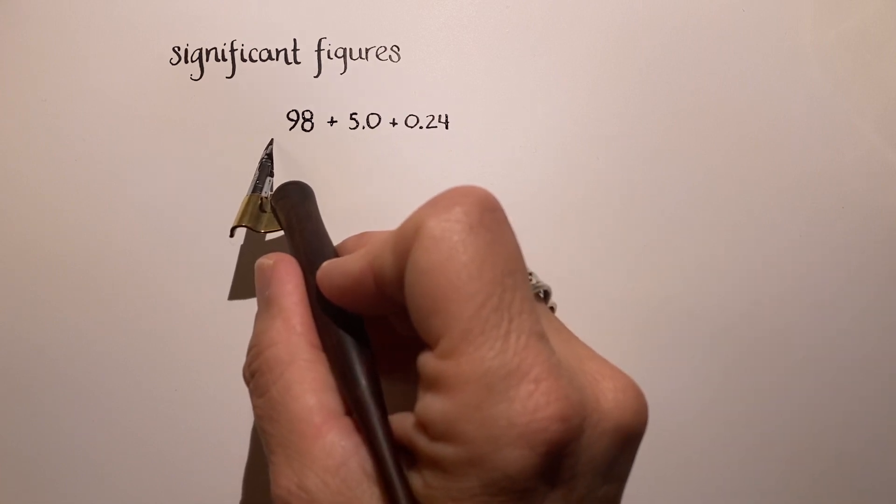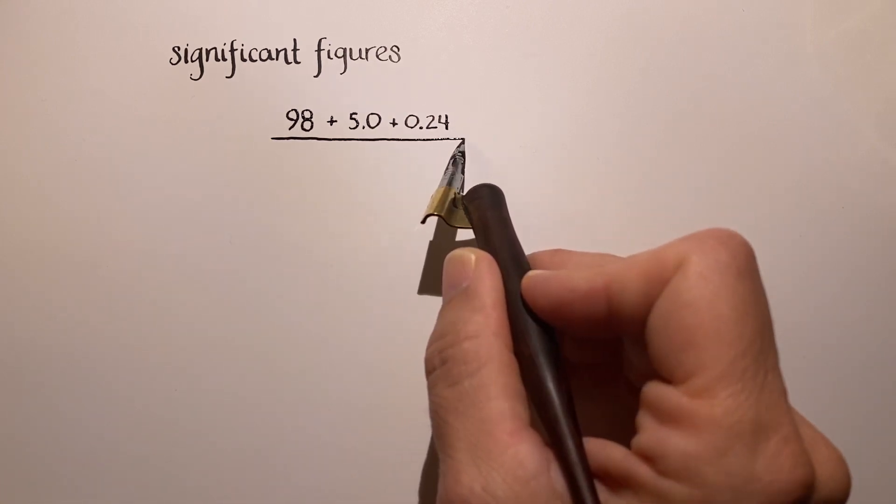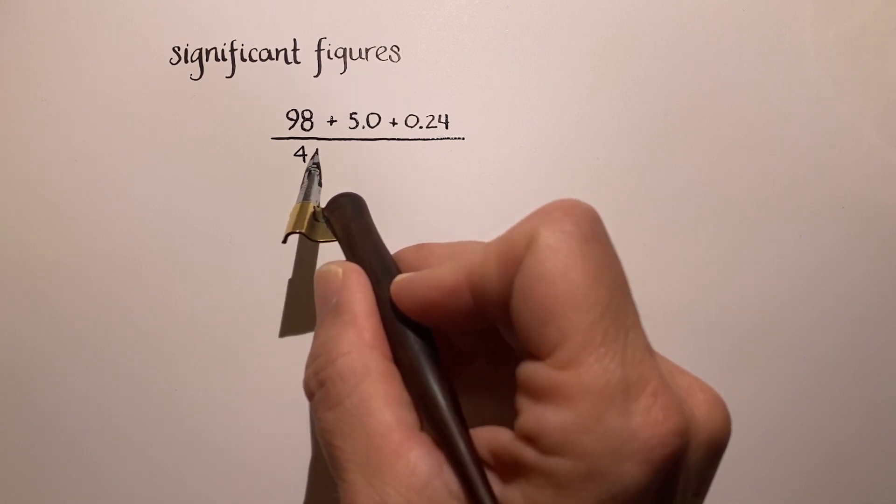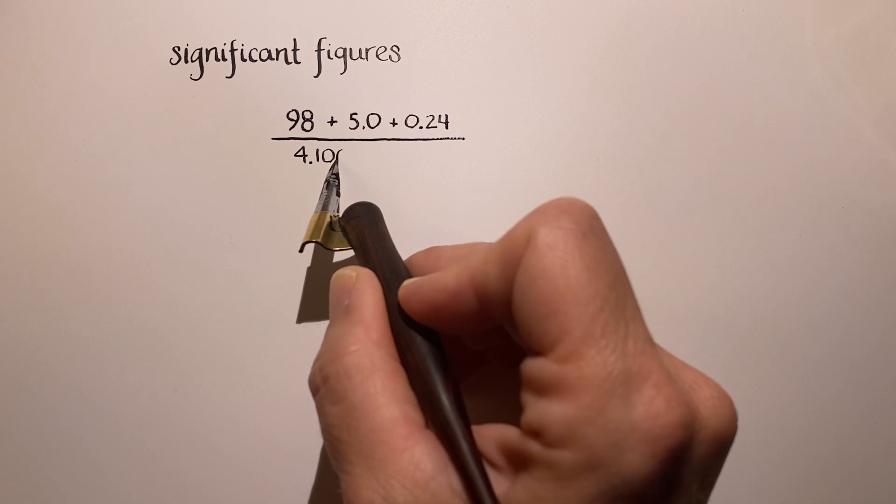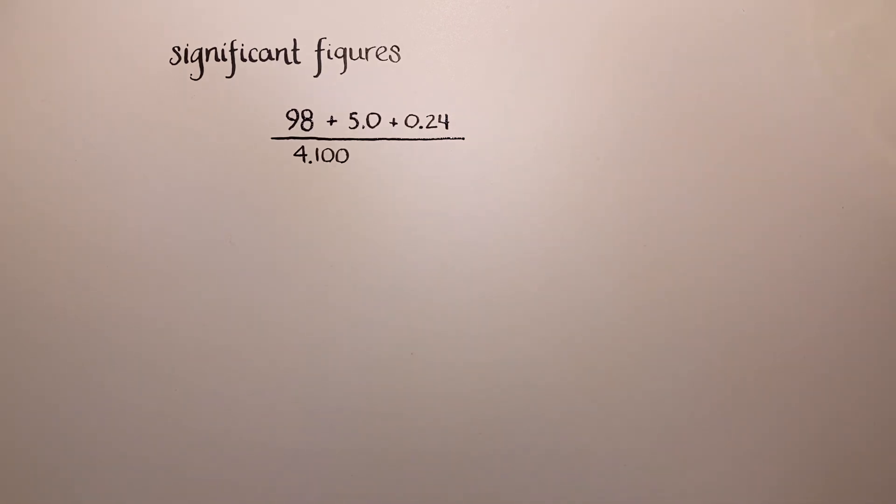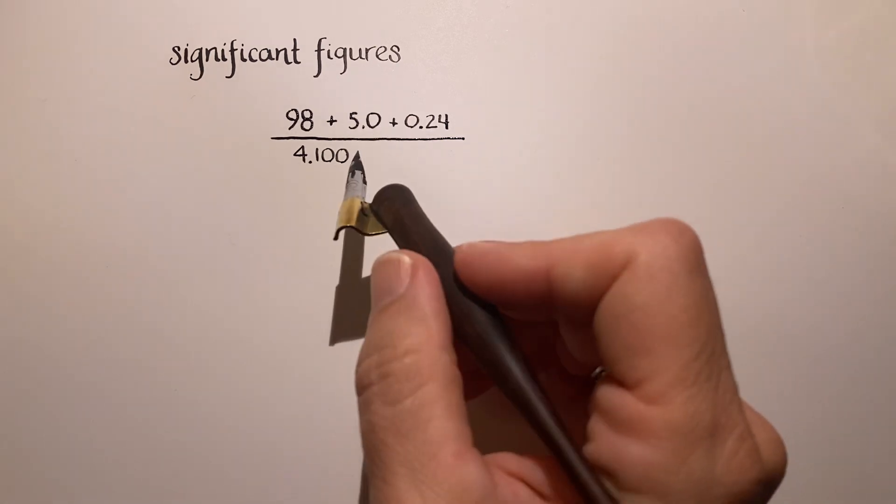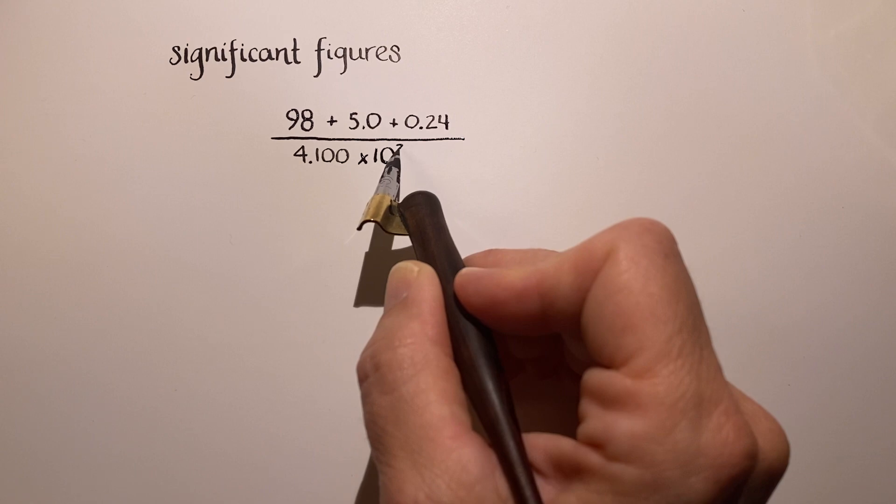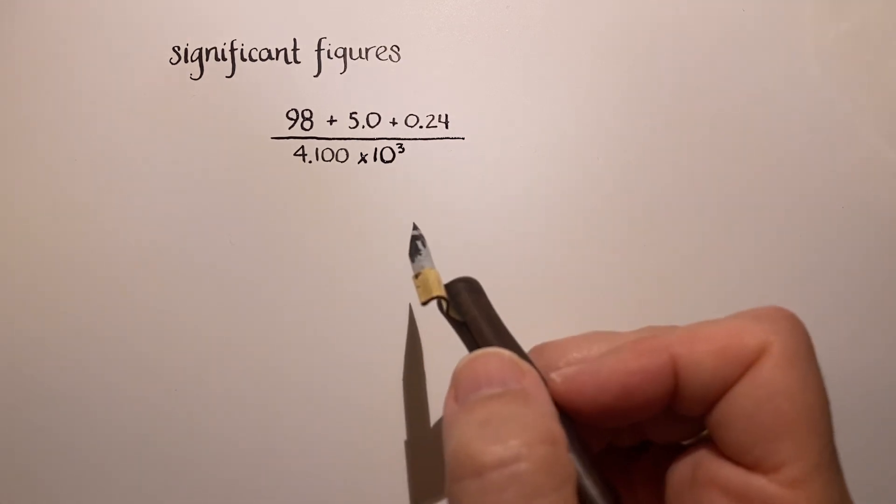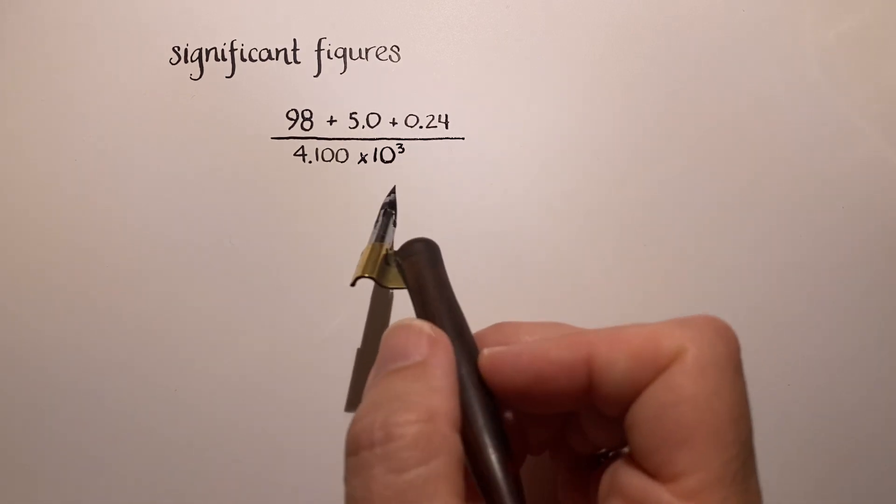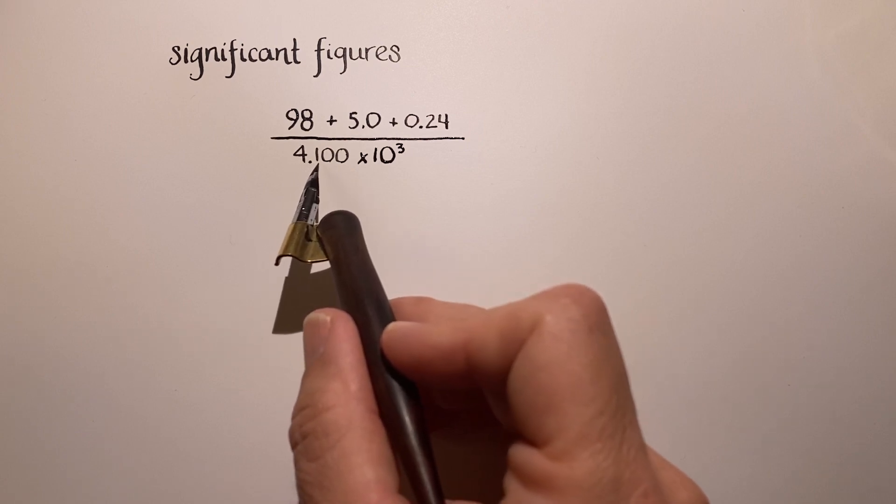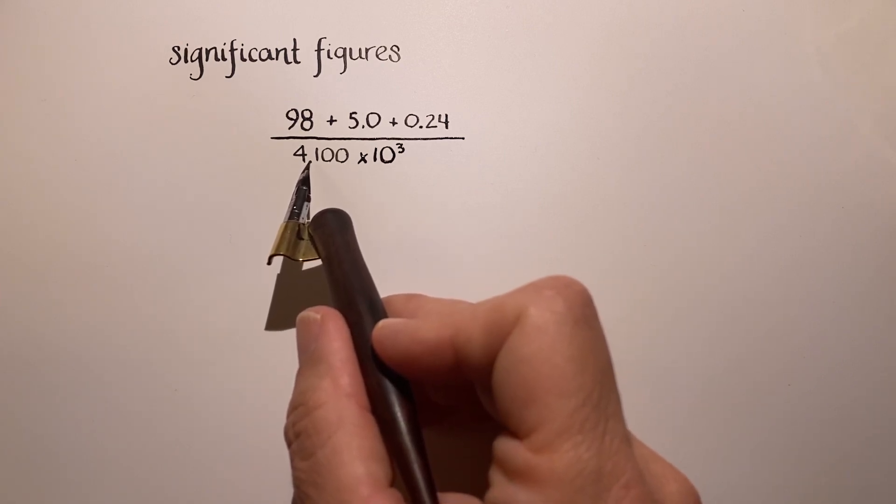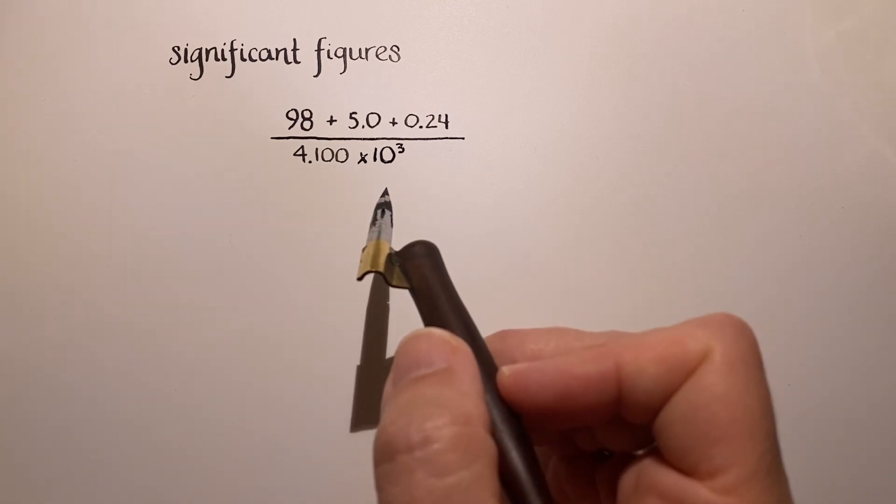Okay, so we're going to add those up, and then we're going to divide the result by this value here. This is 4.100 times 10 to the third. This number is written in scientific notation. So again, with this value here, take a look at it and determine the number of significant figures that it has. And if you're thinking four, then you are correct. These zeros after the decimal point do count as significant figures.